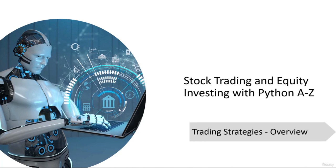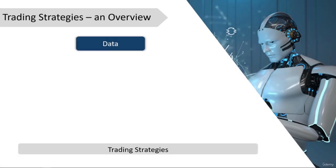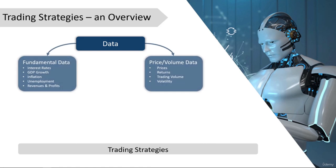There exist thousands or even millions of different trading strategies. Trading strategies are based on data, and there are two different types: fundamental data and price-and-volume data. Fundamental data includes interest rates, GDP growth, inflation, unemployment, and company revenues and profits. Price and volume data is specific to instruments: historical prices and returns, trading volume, and volatility. We can use fundamental data with simple economic rules, or feed advanced statistical and machine learning models.